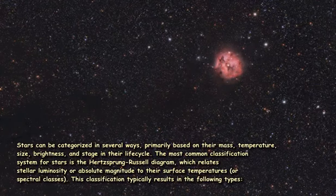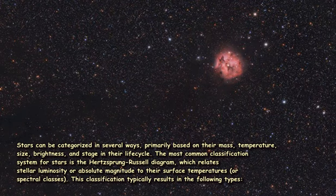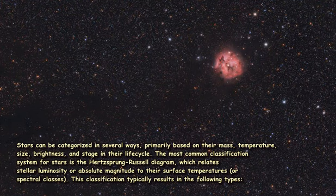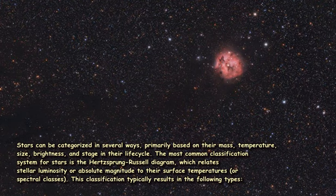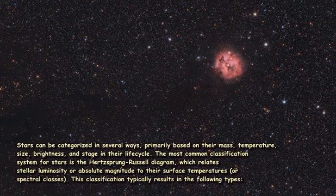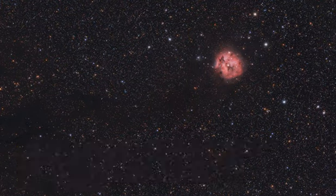Stars can be categorized in several ways, primarily based on their mass, temperature, size, brightness, and stage in their life cycle. The most common classification system for stars is the Hertzsprung-Russell diagram, which relates stellar luminosity or absolute magnitude to their surface temperatures, or spectral classes. This classification typically results in the following types.